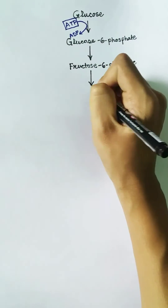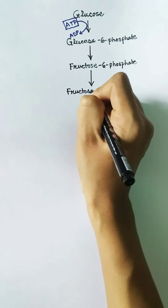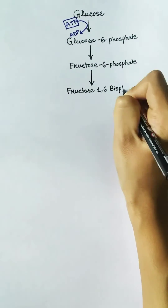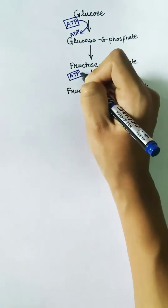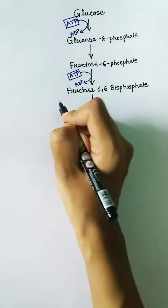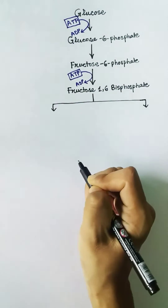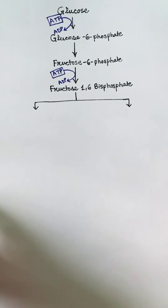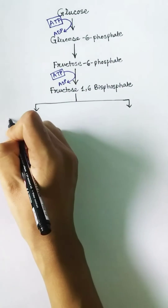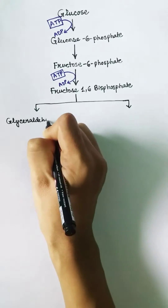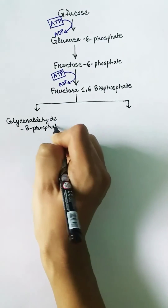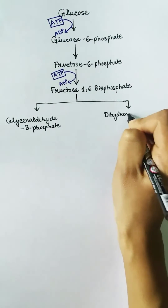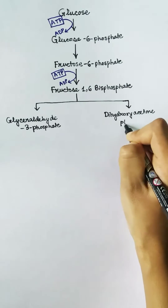The second ATP consumption occurs to convert fructose-6-phosphate to fructose-1,6-bisphosphate, where another phosphate group is added and another ATP is consumed. From fructose-1,6-bisphosphate, two molecules are formed: one is glyceraldehyde-3-phosphate and the other is dihydroxyacetone phosphate.